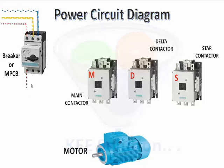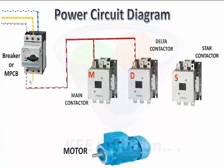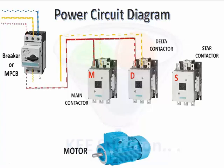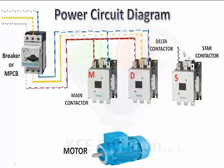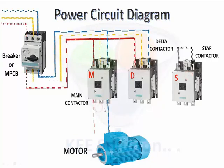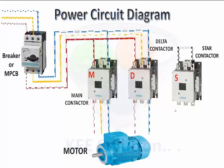First we take the red phase. Red phase should be connected at the first terminal of the main contactor and delta contactor. Yellow phase similarly at the second terminal of the main and delta contactor, and the third phase in the same way. In the main contactor at the end terminal, red, yellow, blue phase in sequence, and delta similar to the main contactor.